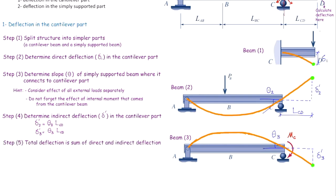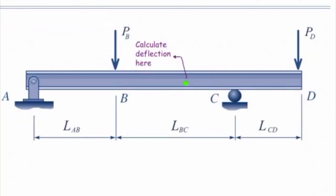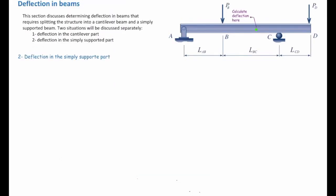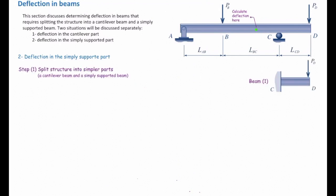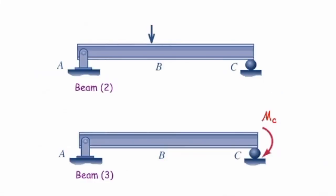Now let's consider the second situation: determining deflection in the simply supported part. Again we split the structure into a cantilever part and a simply supported part. In the simply supported part, apply all external forces and take care of the internal moment. In this figure there is one force on the simply supported part and one internal moment, so we have two beams.